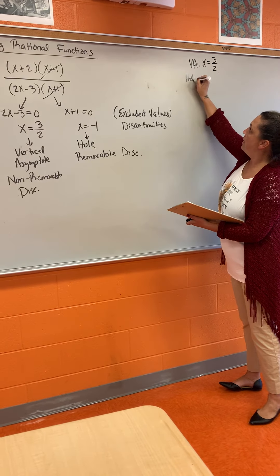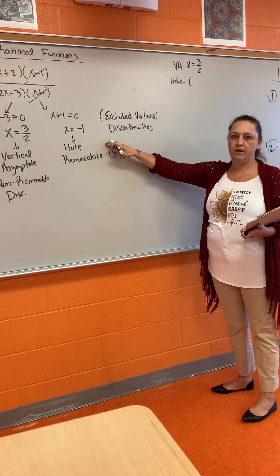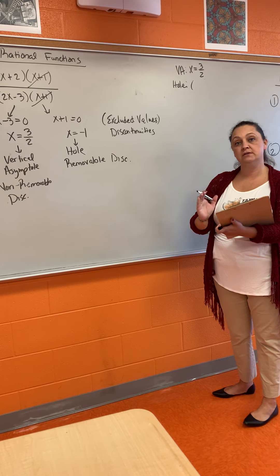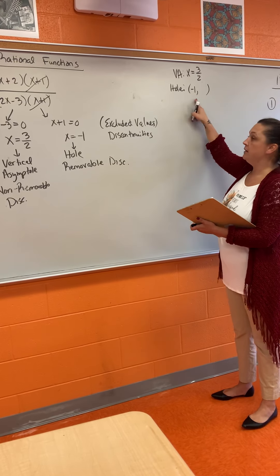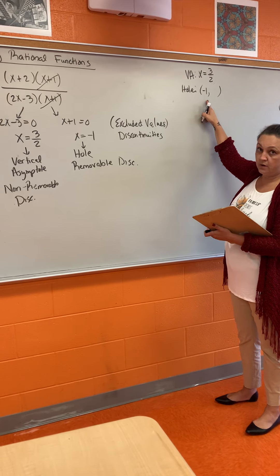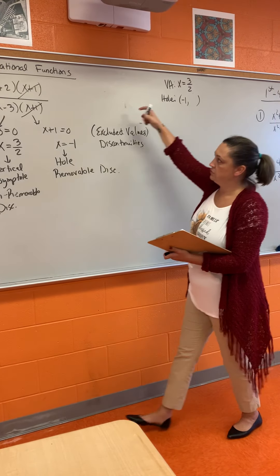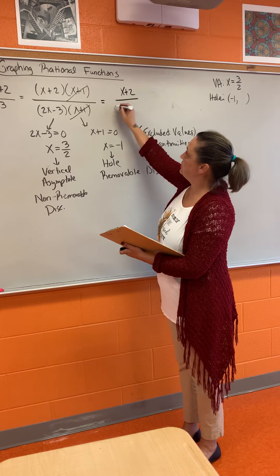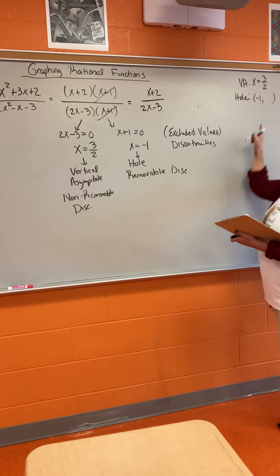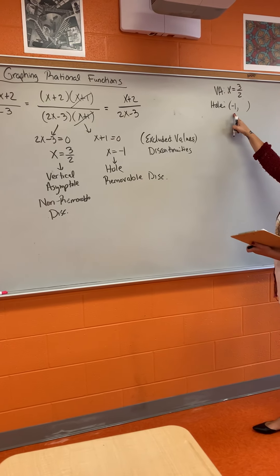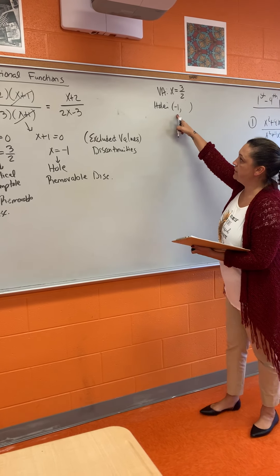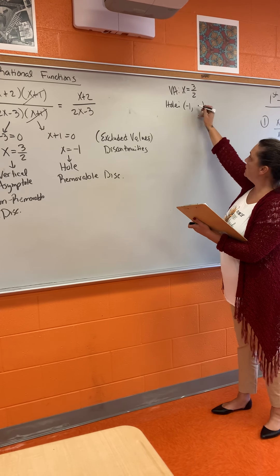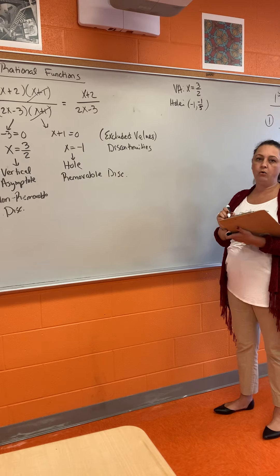We have a hole at x = −1, but a hole is at an ordered pair location. So I have to take that −1 and plug it back into the reduced function. After we've removed the (x + 1), what we have left is (x + 2) / (2x − 3). Plugging in −1 gives us −1/5, so the hole lives at (−1, −1/5).